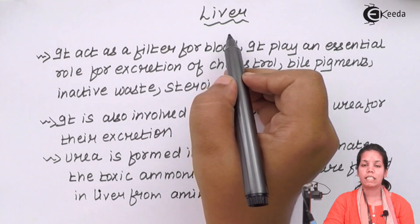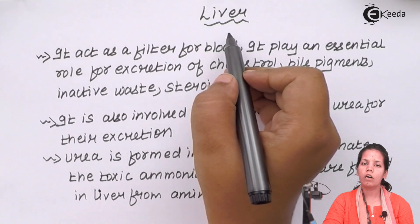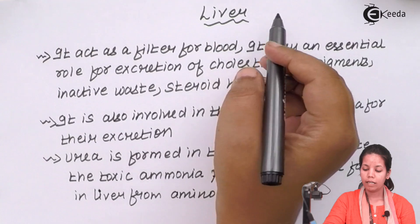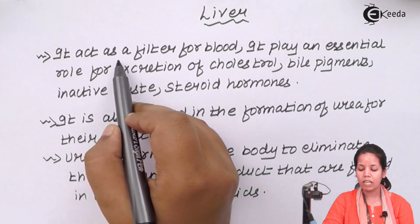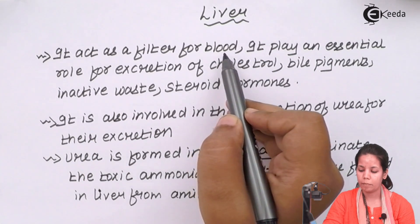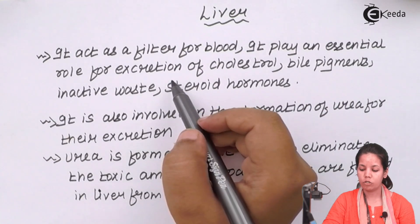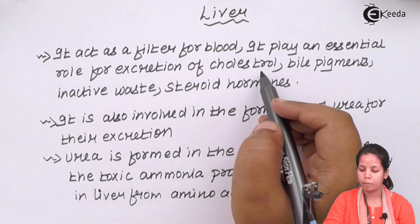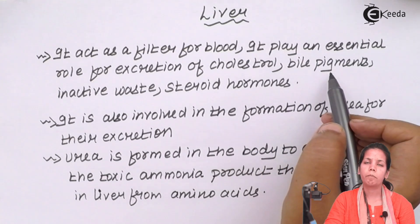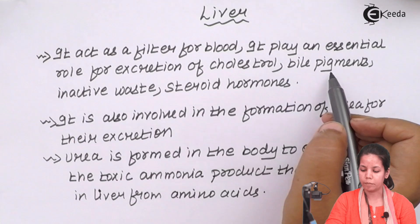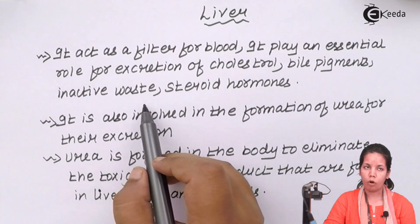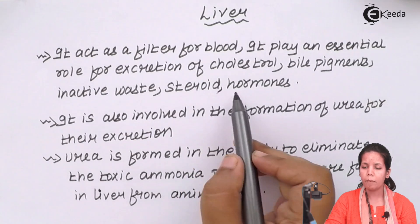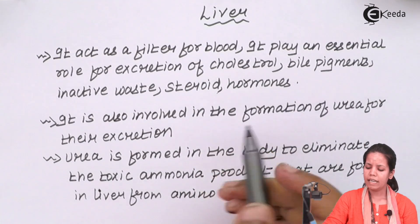Liver, being the largest gland of your body, is also a small accessory excretory organ. It acts as a filter for your blood. It plays a great role in excretion, filtration, and removal of cholesterol — the harmful one — as well as byproducts of bile pigments not required by the body, and inactive waste in the form of certain steroid medicines or certain hormones produced in excess and not required.